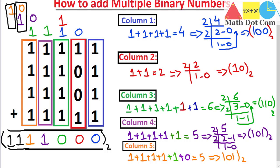Although there is another method where you add the first two binary numbers together, then add the result to the third, and then to the fourth, and you will get the same answer. I am leaving this as an exercise for you. So that's all from today's lecture. Hope it will help you a lot in adding multiple binary numbers.